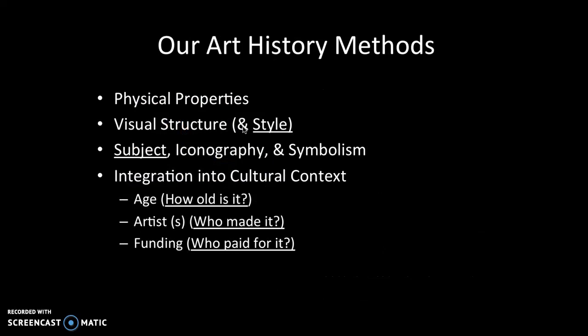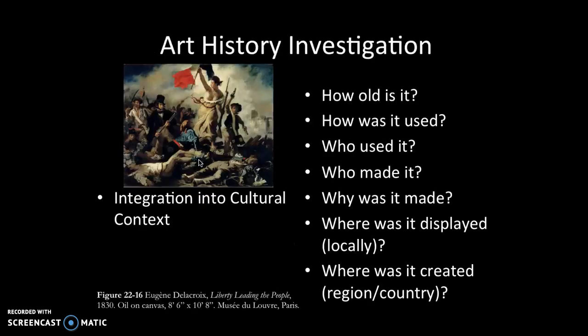As a review, our art history methods — in this class we are going to talk every week about physical properties, visual structure, subject iconography and symbolism, and integration into cultural context. We're also going to talk about style. All of these influence style, because style is often visual structure, but it can also be the subject — what subjects are depicted. For example, in Romanticism, you might have subjects depicted in a very dramatic way, but also the subjects chosen are already dramatic kinds of subjects.